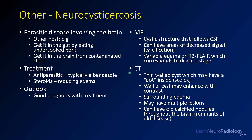On MR, you tend to have a cystic structure that follows CSF. You may have areas of calcification that are dark on T2, and varying degrees of edema corresponding to different stages of infection. On CT, you often get a thin-walled cyst, which may have a dot inside — the scolex or parasite itself. The wall of the cysts can enhance with contrast on CT or MR, with some surrounding edema. A best clue is old calcified nodules throughout the brain, which can be remnants of old episodes of neurocysticercosis.